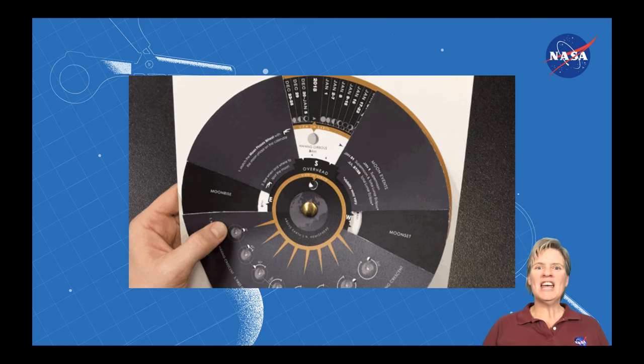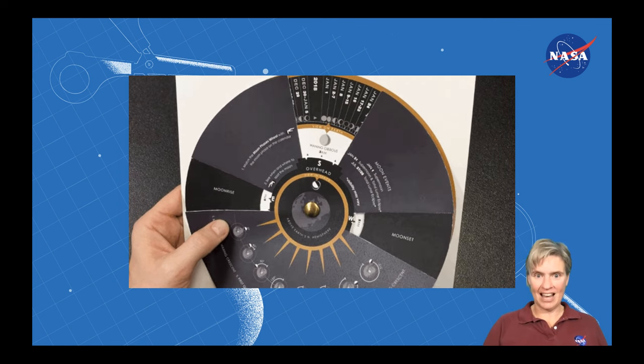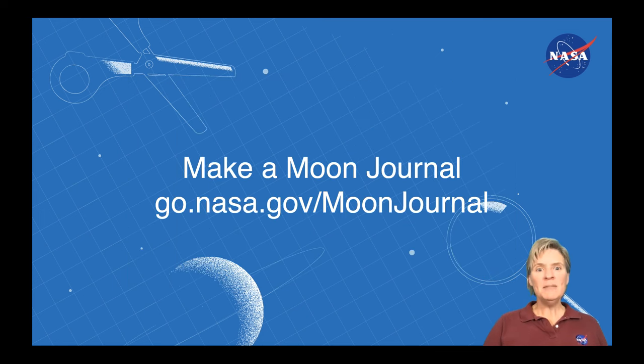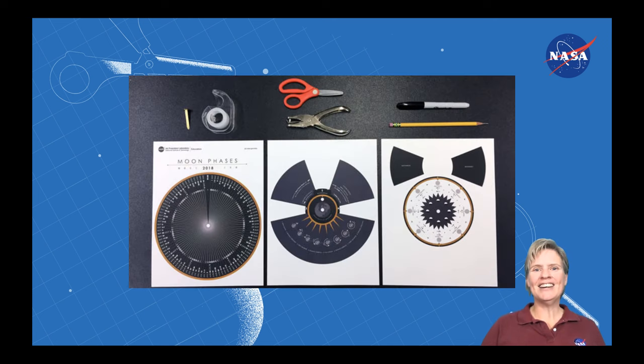We're going to make a moon phases calendar and calculator. You need to be familiar with the phases of the moon, so things like a waxing crescent or a waning gibbous. If you need to brush up on that a bit, take a look at the moon journal activity. Make a moon journal, learn a bit about the phases, and then come back here.